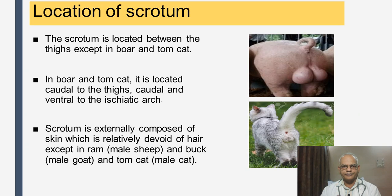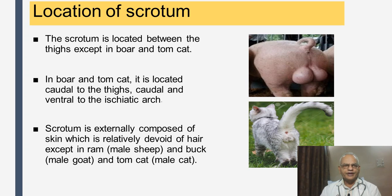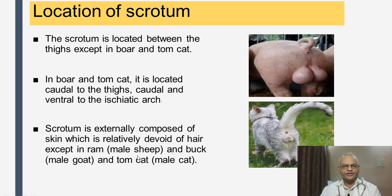The scrotum is a pouch of skin and fascia that holds the testes outside the animal's body. It is located between the thighs in most domestic animals, except in the boar and tomcat, where they are located caudal to the thighs, caudal and ventral to the ischiatic arch. The scrotum is externally composed of skin which is relatively devoid of hair, except in the ram, buck, and tomcat — these three species have hair on the scrotum.